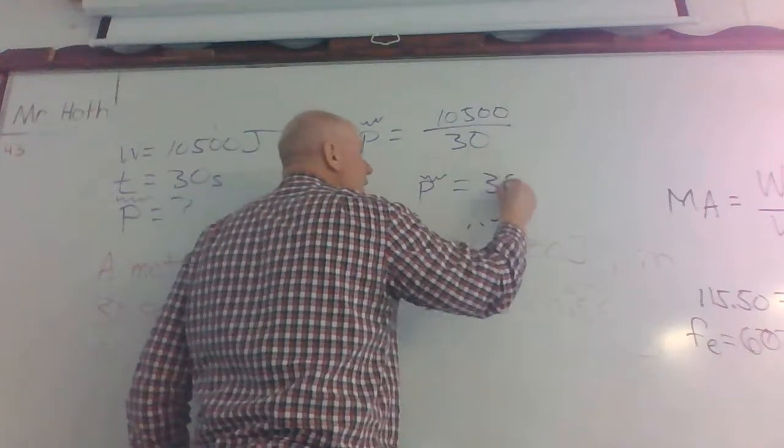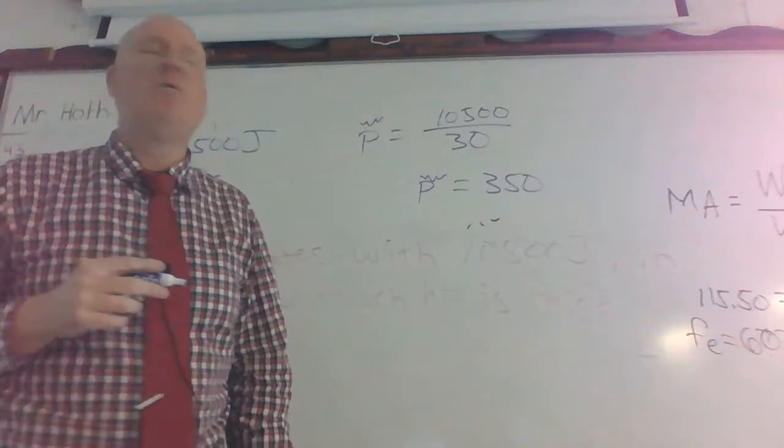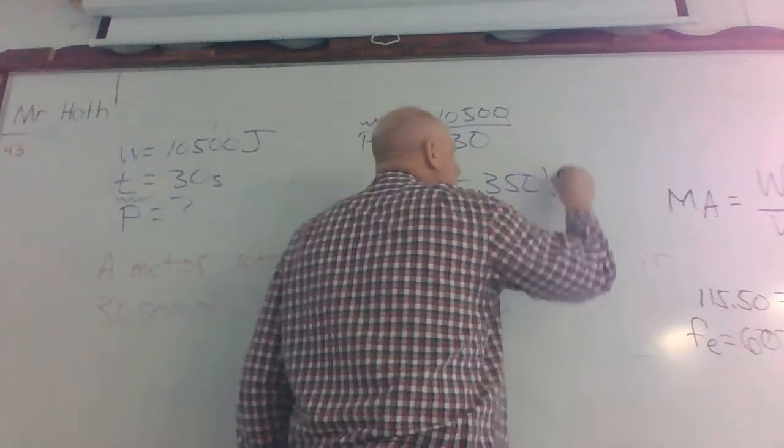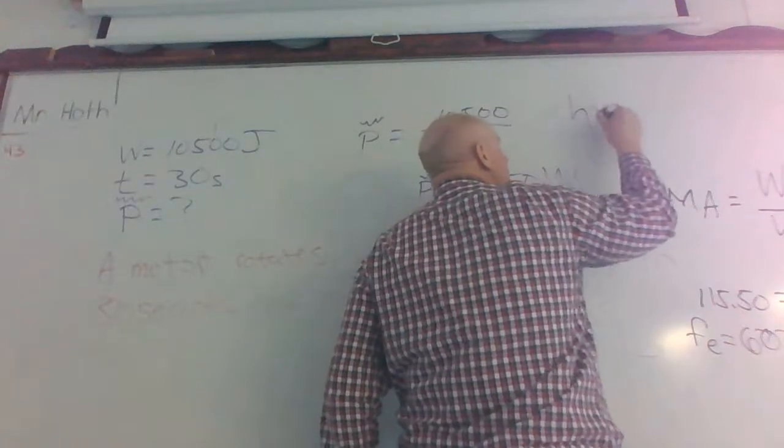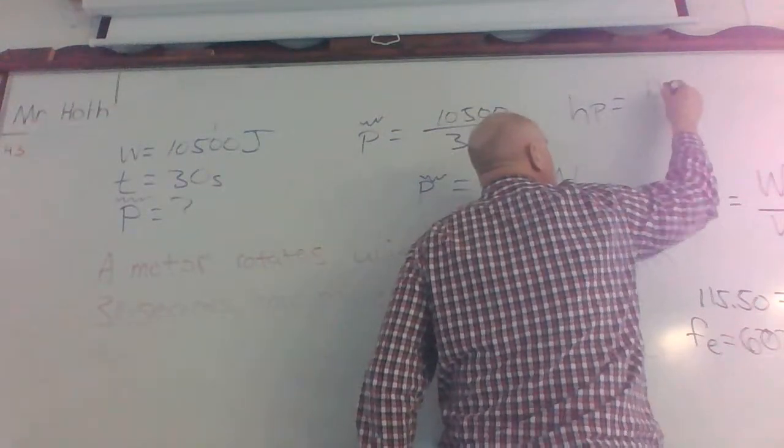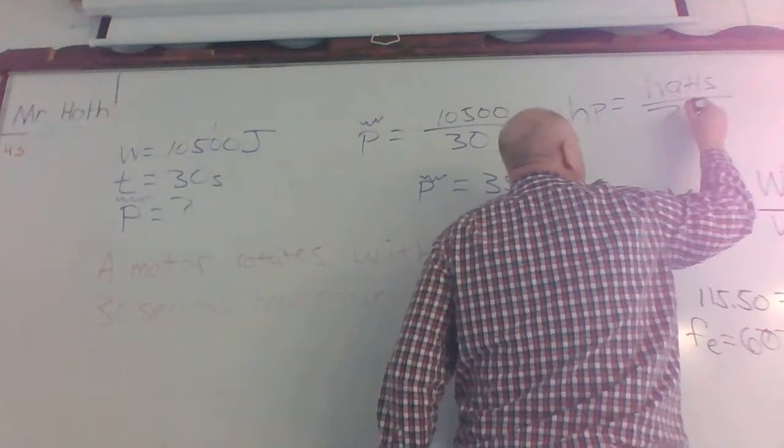So 350, how do we label that? Watts, capital W. You just leave it in watts. All right, so horsepower, on the other hand, horsepower equals your number of watts divided by 746.